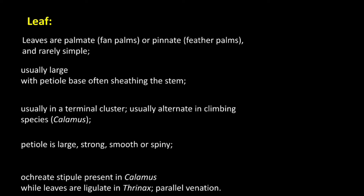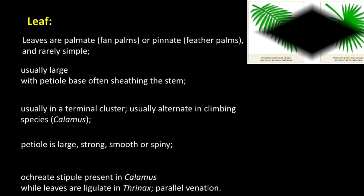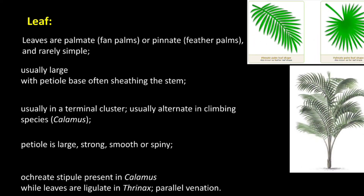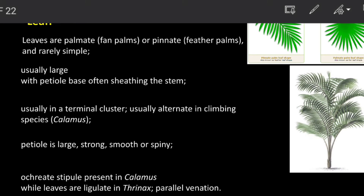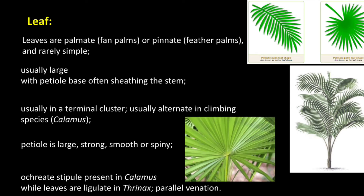Ocreate stipules are present in Calamus, while leaves are ligulate in Thrinax. Leaves have parallel venation. Ocreate stipule means a tube-like stipule covering the stem. Two types of leaves are found — palmate and pinnate — and ocreate stipules are found in Calamus.